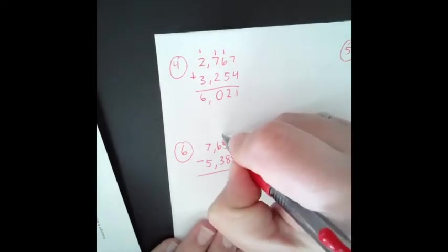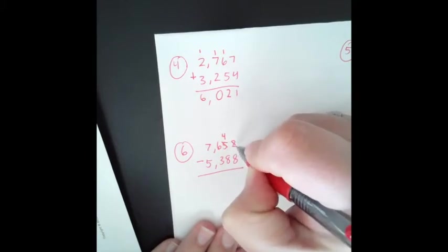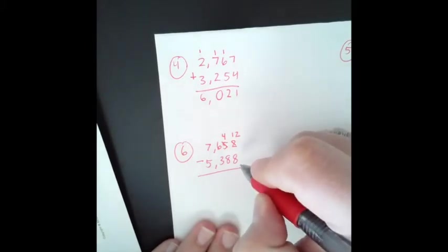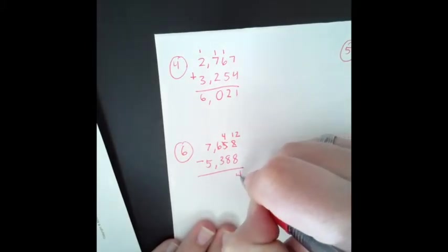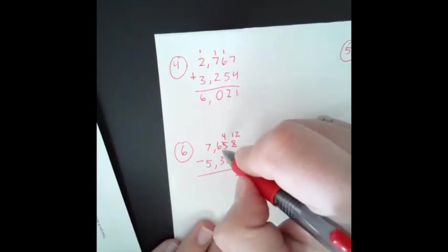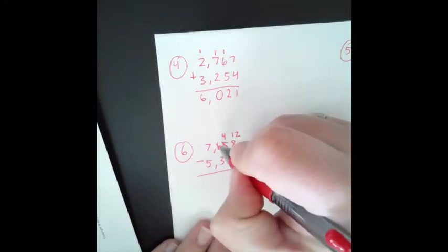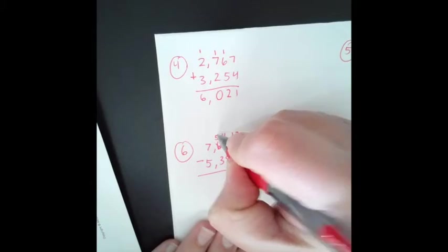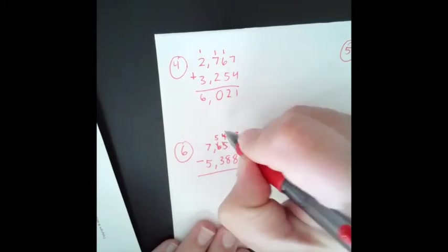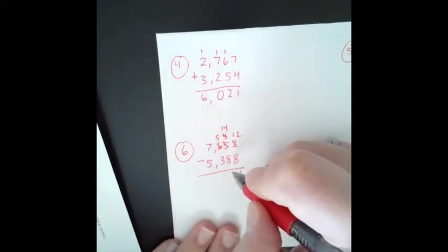So we're going to trade 1, make it 4. We're going to add 10 ones to the 2 we already have. So that makes it 12. 12 take away 8. We can do that now. That's 4. 4 take away 8. We are not able to do that. So we need to trade again from the 100s place. So we're going to trade 1 of these 100s, make that 5. Then we added 10 tens to the 4 that we already had. So now it's 14. 14 take away 8 is 6.